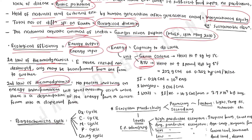The second law of thermodynamics states that no process involving an energy transformation will spontaneously occur unless there is a degradation of the energy from a concentrated form into a dispersed form. These are the two laws of thermodynamics you have to remember.